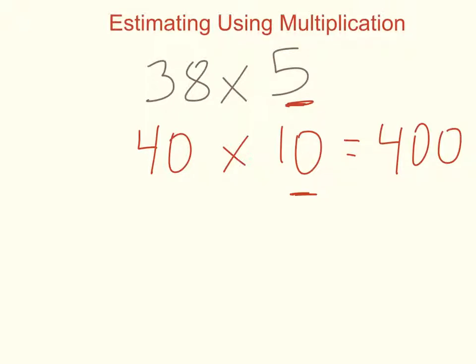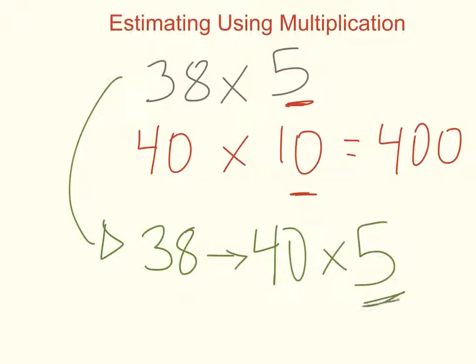Instead, when we have something like 38 times 5, what we should do is change the 38 maybe to a 40, and we should multiply it by 5. We should keep the 5, because it's easy to multiply things by 5. Remember, cross out the 0, 4 times 5 is 20, tack on a 0. See how that's way different than this estimate here?